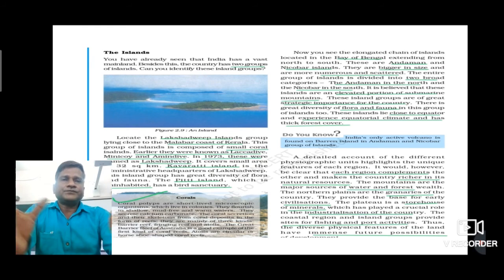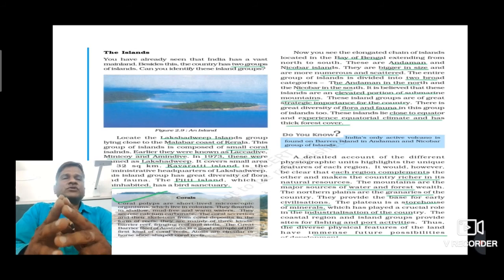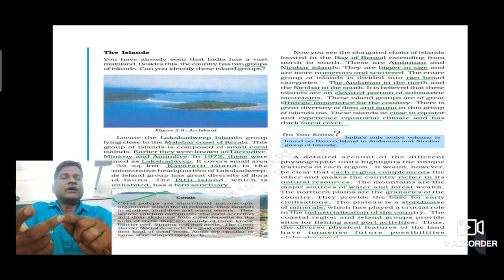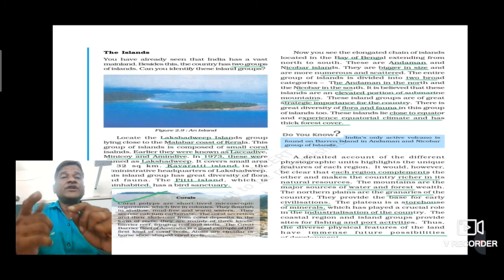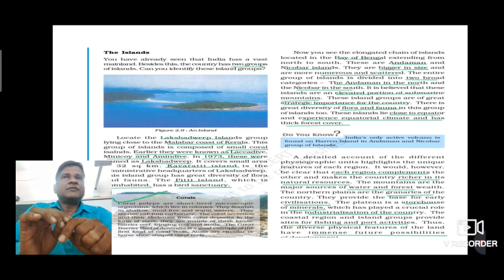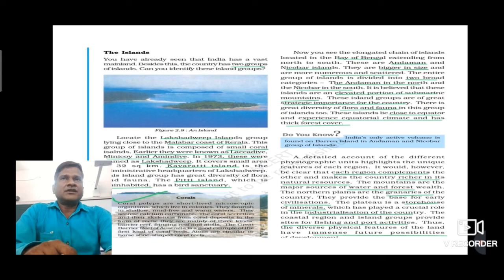Now we are going to conclude this chapter by discussing the importance of all these six geographic divisions for our nation. A detailed account of the different geographic divisions highlights the unique features of each region — the Himalaya, Northern Plain, Desert, Coastal Plains, and the Peninsular Plateau. All of them have unique features. Each region complements the other and makes the country richer in natural resources. The mountains are major sources of water and forest, which are also important for economic and other development.